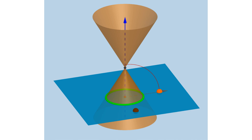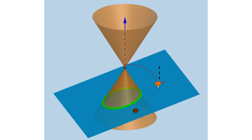Welcome back. Let's talk about the conic sections. As the name suggests, conic sections are two-dimensional curves formed by intersecting a cone with a plane. Look at the representation here — the blue colored plane is going to intersect these cones in different possible angles. Let us see the possibilities of cross-sectional intersection of this plane with the cone.